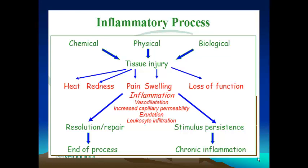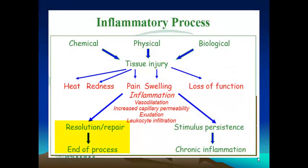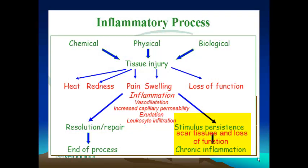There are two possible outcomes to an inflammatory process. The body is able to win the fight against the aggressor and repair all the damage if tissues are capable of regenerating, and then the inflammation disappears without leaving any traces. The other outcome is when the body cannot eliminate the aggression, in which case the inflammation becomes chronic, characterized by scar tissue replacing normal tissue and a permanent loss of function.